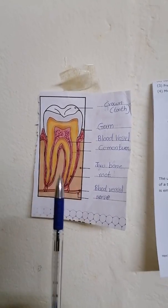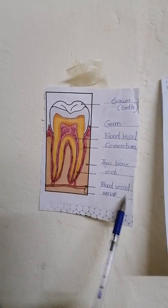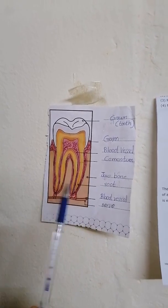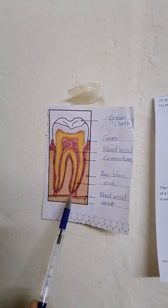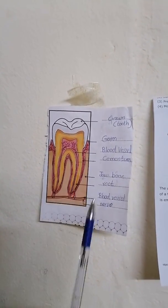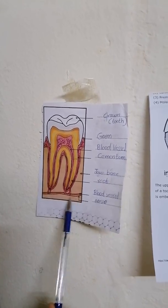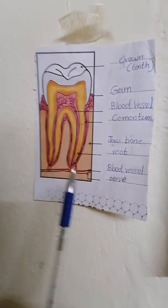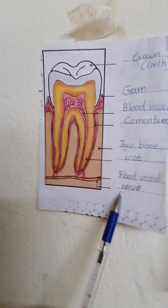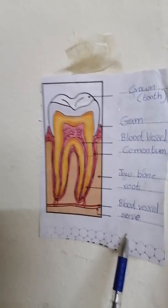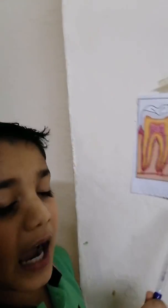This yellow thing is the root. The root goes inside the jaw bone very deep and makes the teeth strongly fitted. The red thing is called blood vessels. Blood vessels transport blood to the tooth. And this blue thing is called the nerve. Now you know how the structure of the teeth looks like.